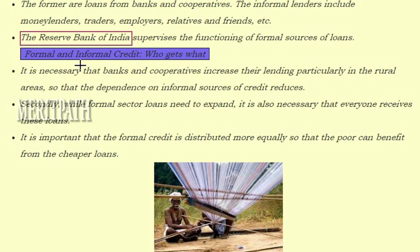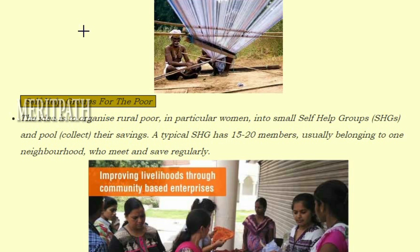It is necessary that banks and cooperatives increase their lending, particularly in rural areas, so that dependence on informal sources of credit reduces. While the formal sector needs to expand, it is also necessary that everyone receives these loans. It is important that formal credit is distributed more equally so that the poor can benefit from cheaper loans.